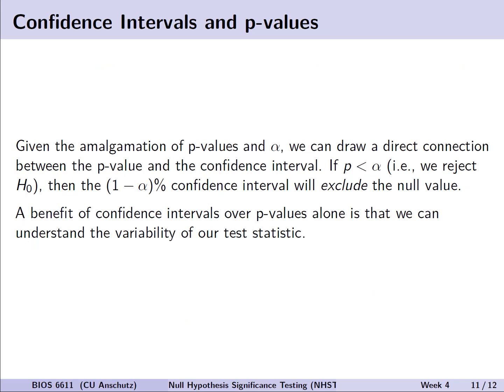Now, there's also a direct connection between confidence intervals and p-values. So, given our amalgamation of p-values and our alpha value for type 1 error, we can draw a direct connection between the p-value and the confidence interval. For example, if p is less than whatever we've set alpha at when we designed our study, we would then reject the null hypothesis H0. Then, if we calculate a 1 minus alpha percent confidence interval, that confidence interval will exclude the null value if p is less than alpha.